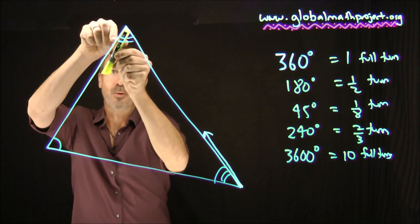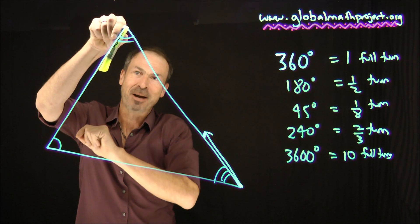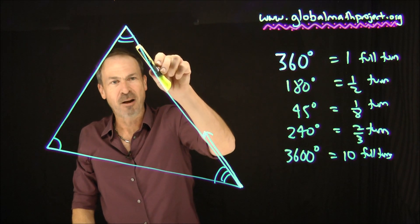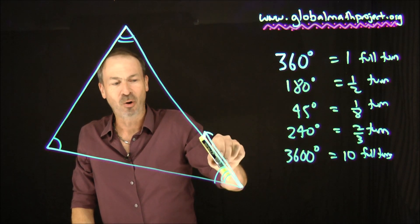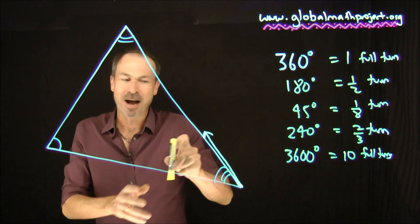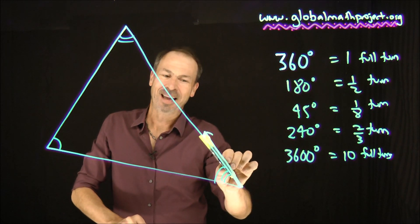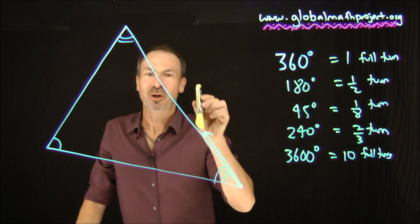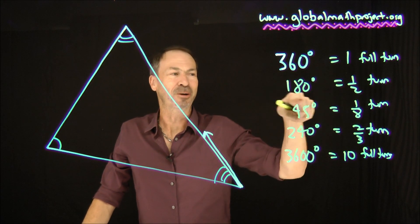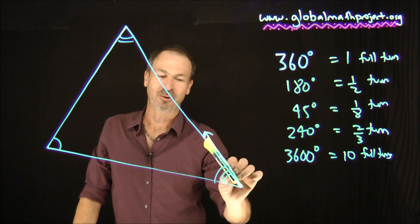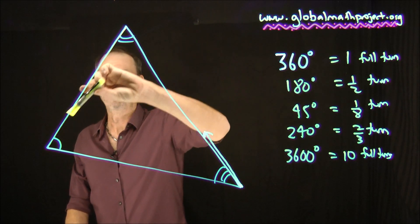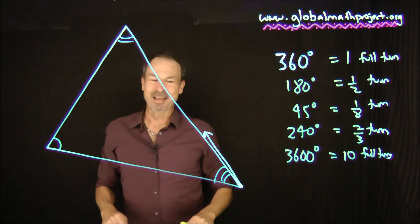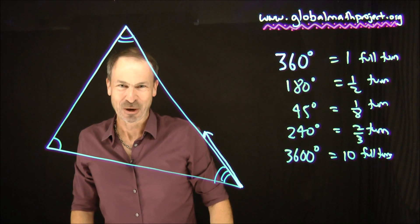Now I'm set to apply this third amount of turning to the marker. Bringing it back for comparison, look what's happened: the marker started this way and ended up that way. Those three turns amounted to turning the marker half a turn — 180 degrees. Three angles in that particular triangle add up to half a turn.